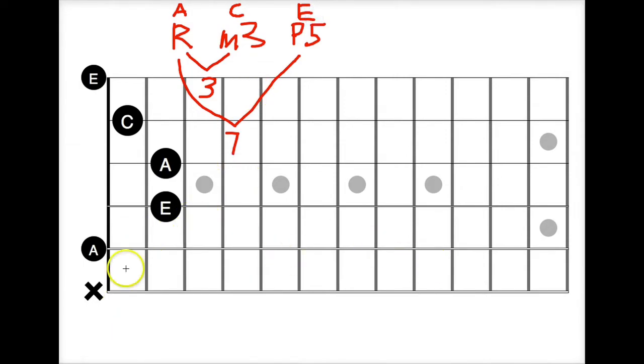So let's plot this out on a single string so you can see the interval on that one string there. One, two, three. That's going to be your C right there. Four, five, six, seven.